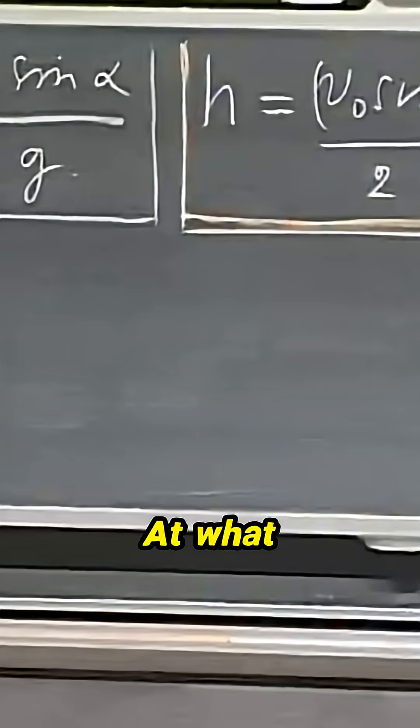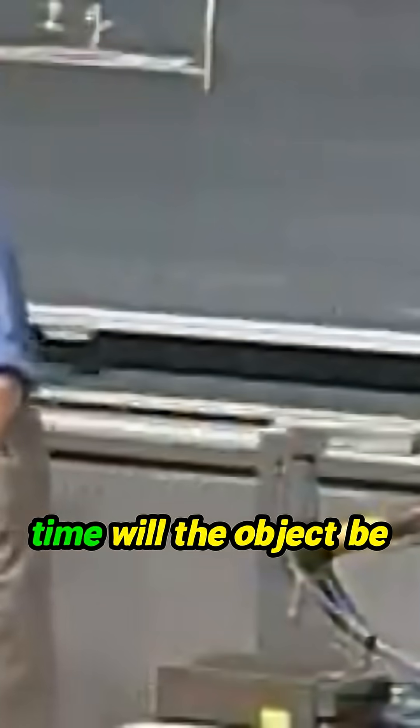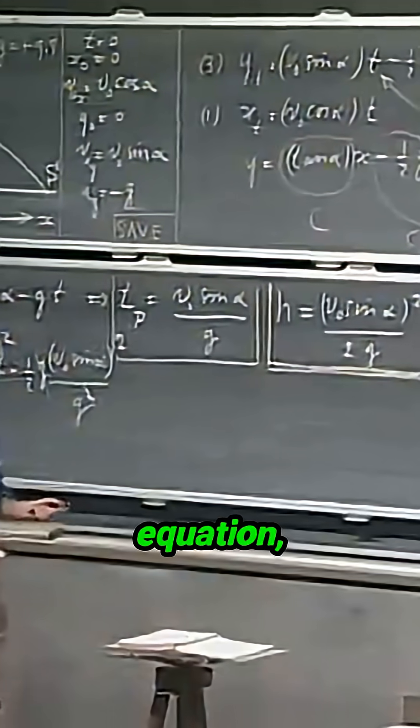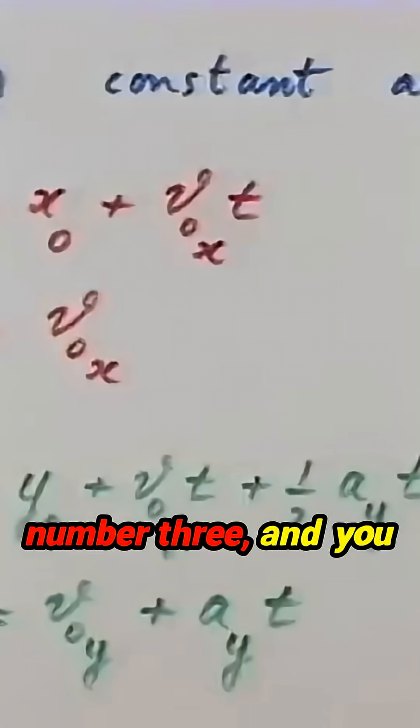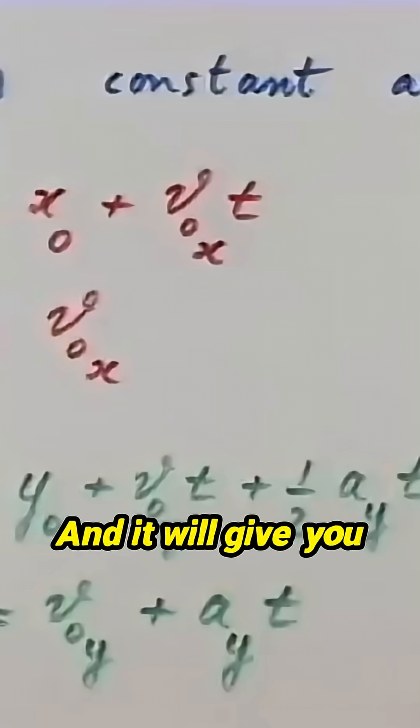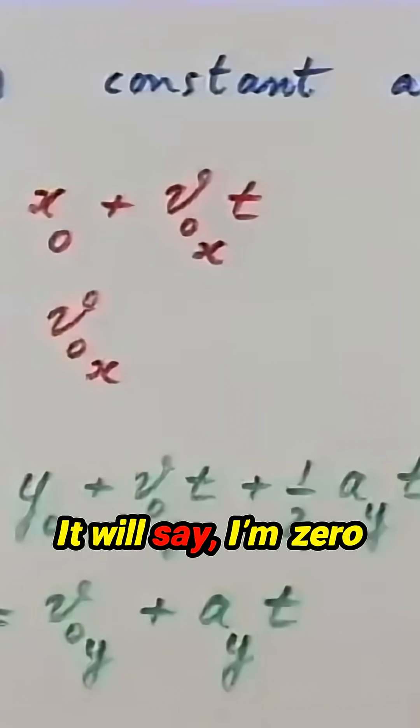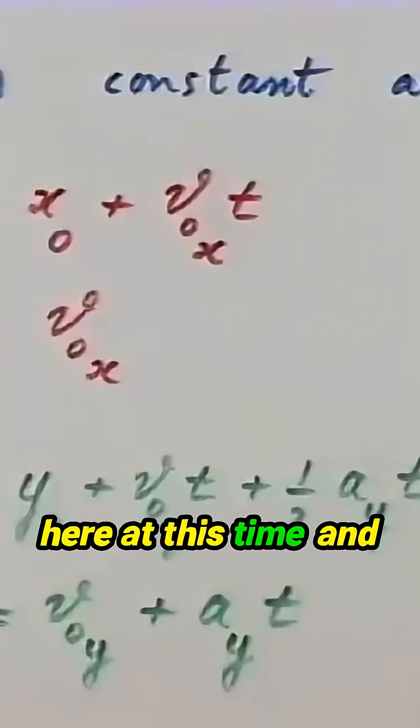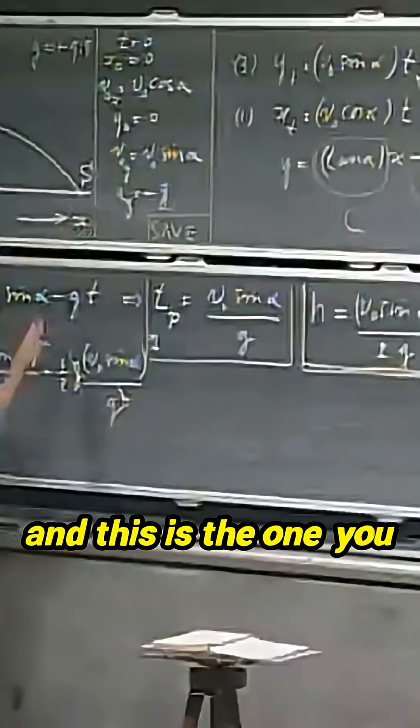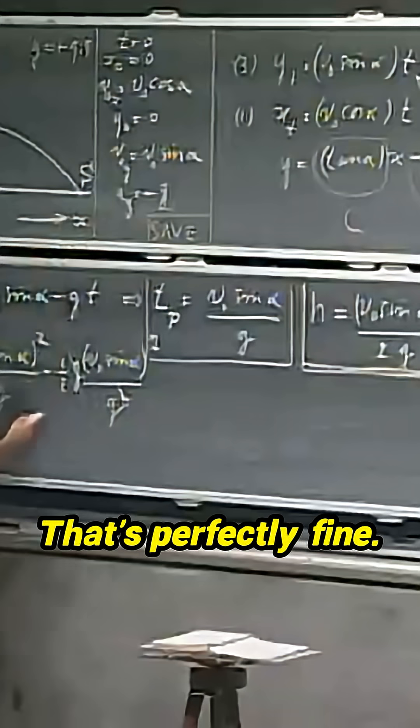So that makes sense. At what time will the object be at point S? Now, there are two ways that you can do that. You either go to this equation, number three, and you ask equation number three, when are you zero? And it will give you two answers. It will say I'm zero here at this time and I'm zero at that time, and those are the two times that you want, and this is the one you pick. That's perfectly fine.